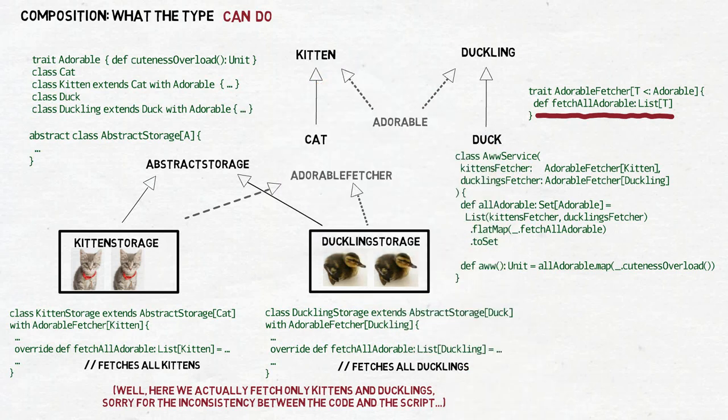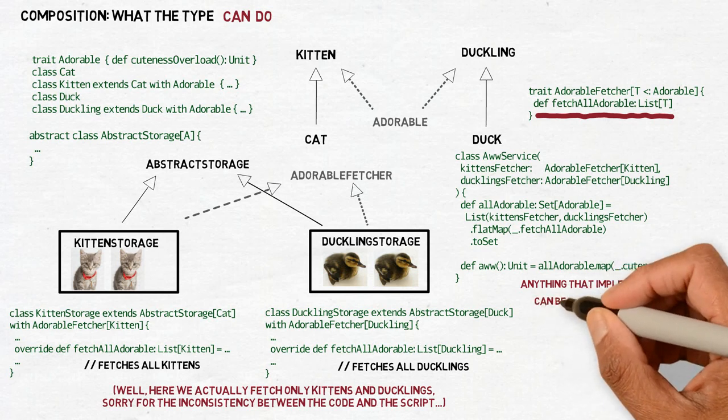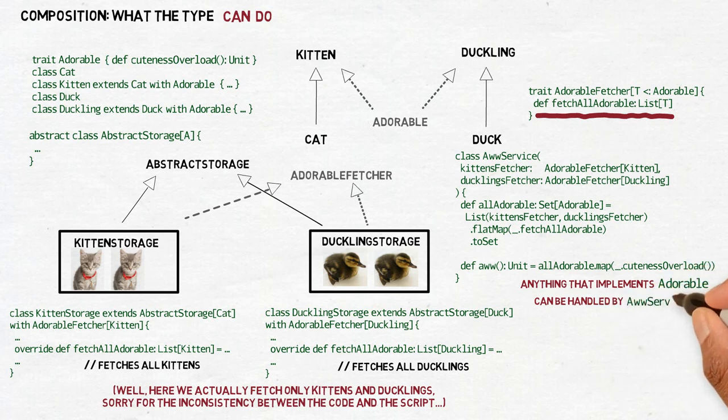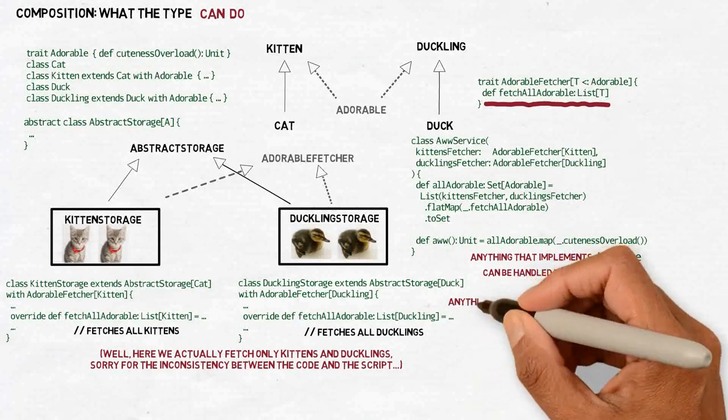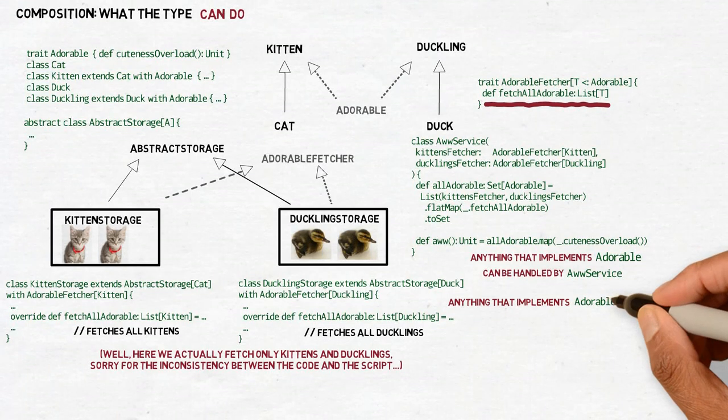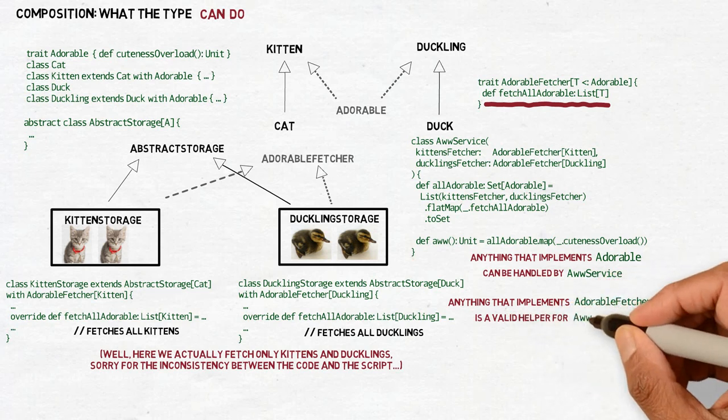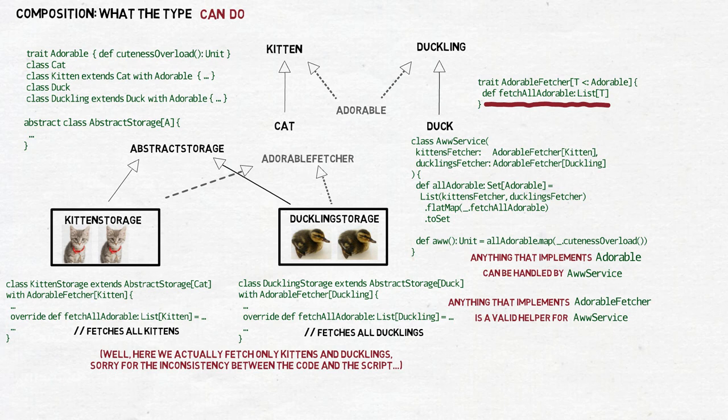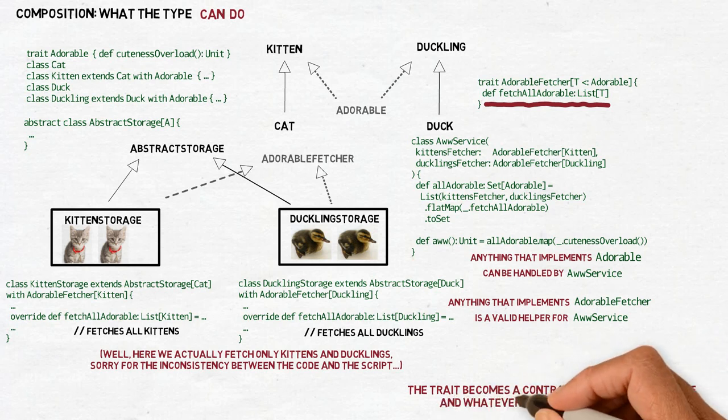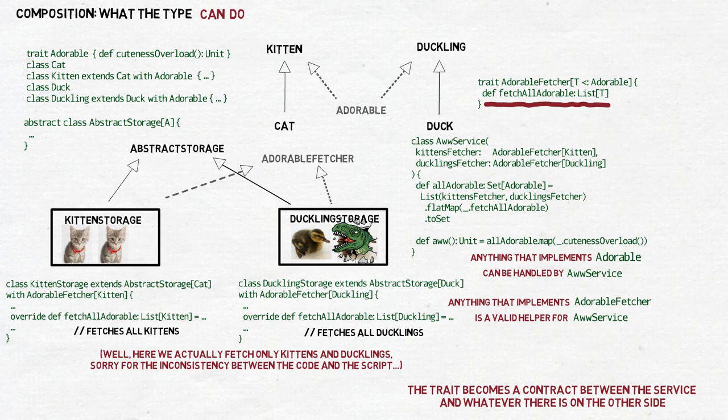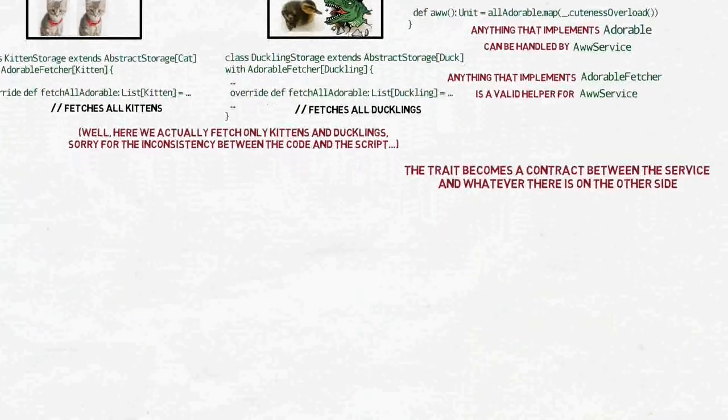By using traits, our service is no longer limited to work only with class hierarchies. Literally, anything that implements adorable can be handled by aw service. And the same goes for adorable fetcher. There's a reason why I didn't call it a storage. Anything that implements the trait adorable fetcher is now a valid helper for aw service. It doesn't have to be a storage. On the other hand, not every storage may fulfill the criteria posed by our service. Some of them cannot fetch anything adorable. The trait adorable fetcher becomes a contract between the service and whatever there is on the other side. In other words, if it walks like a duck and quacks like a duck, then it can be a T-Rex for all we care because we are interested only in that it fulfills the contract of a duck.